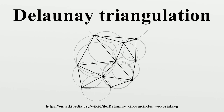For a set P of points in Euclidean space, a Delaunay triangulation is a triangulation DT such that no point in P is inside the circumhypersphere of any simplex in DT. There exists a unique Delaunay triangulation for P if P is a set of points in general position — that is, the affine hull of P is d-dimensional and no set of d+2 points in P lie on the boundary of a ball whose interior does not intersect P.